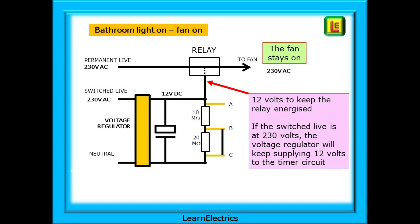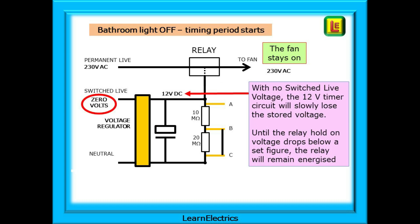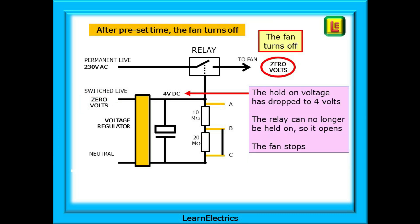Whilst the light is on there will always be 230 volts on the switch live, which means there will always be 12 volts to keep the relay in the on position. If the light is turned off, the switch live drops to 0 volts, but the 12 volts does not drop to 0 straight away. The capacitor has stored some electrical charge and this slowly seeps away depending on which resistor the links or switch have been set to. As the electrical charge drains out through the resistor, the voltage will slowly fall from 12 volts to 11 volts to 10 volts and so on. The relay will hold itself in the on position if the voltage is above say 4 volts, and the fan will stay on. When the voltage drops below 4 volts, this is not enough to hold the relay in the on position, so the relay drops out and the contacts open. When the contacts open, the permanent live is interrupted — no voltage can get to the fan and the fan stops.